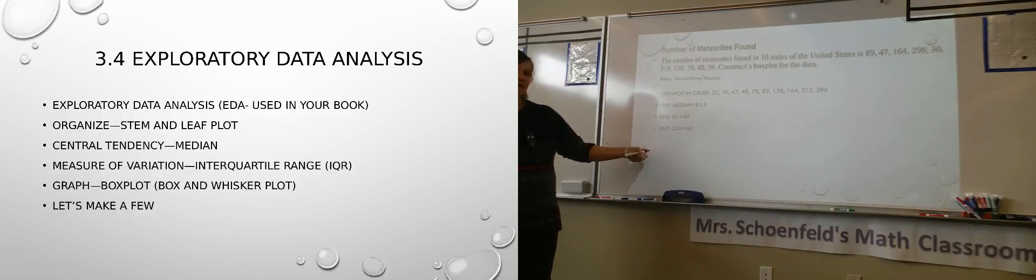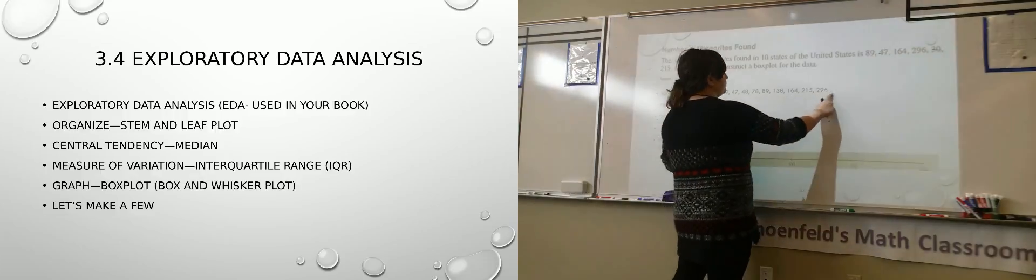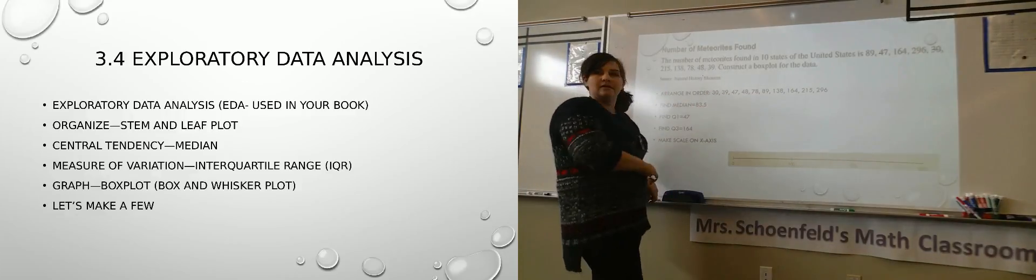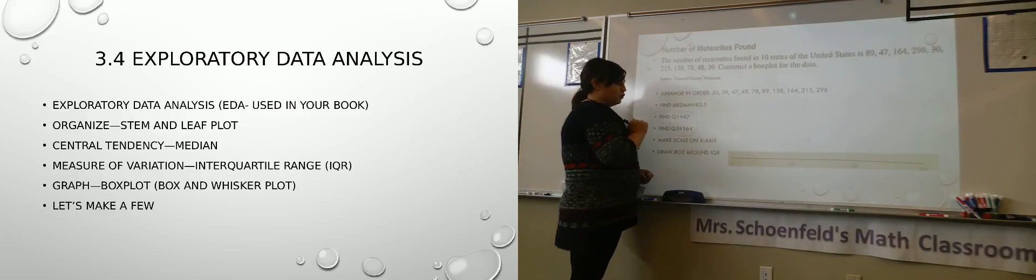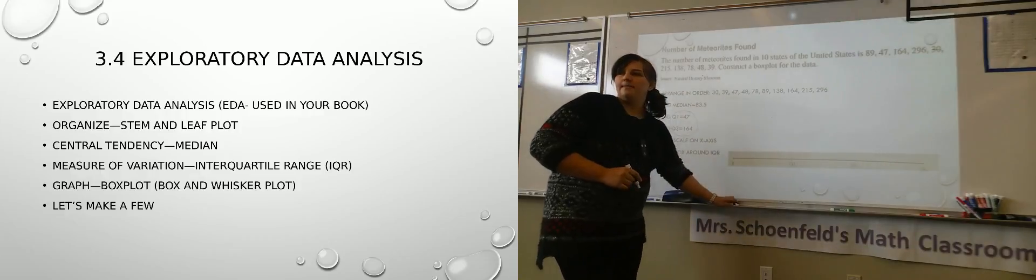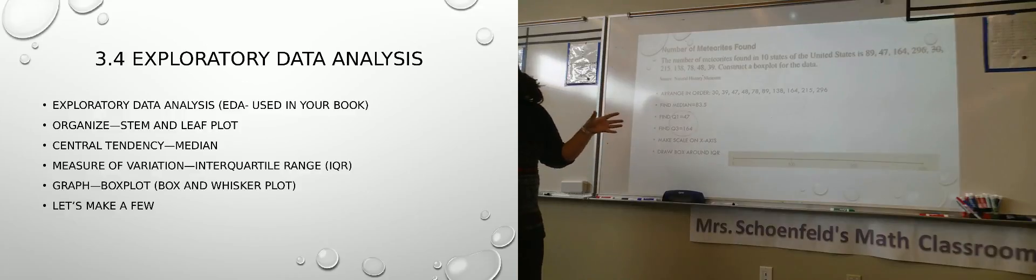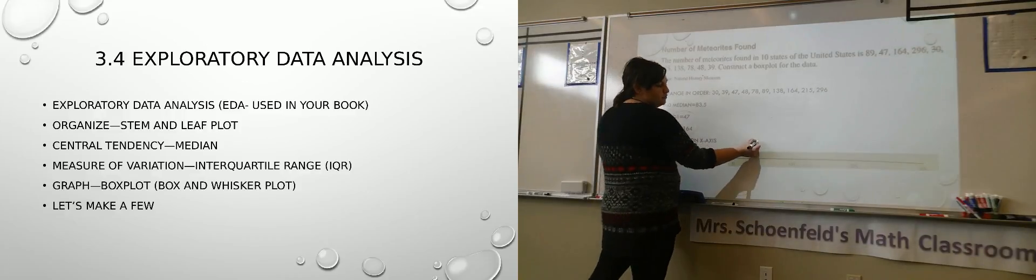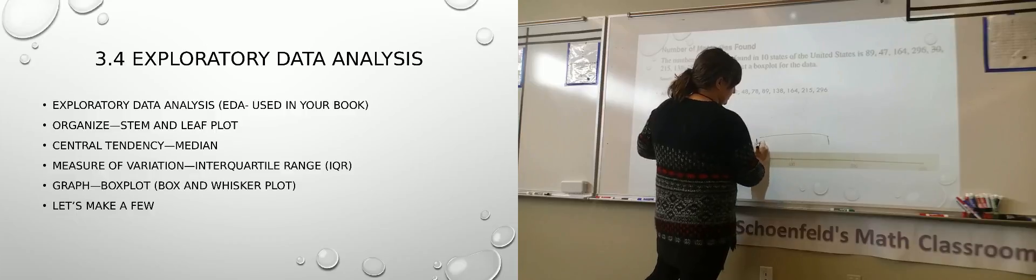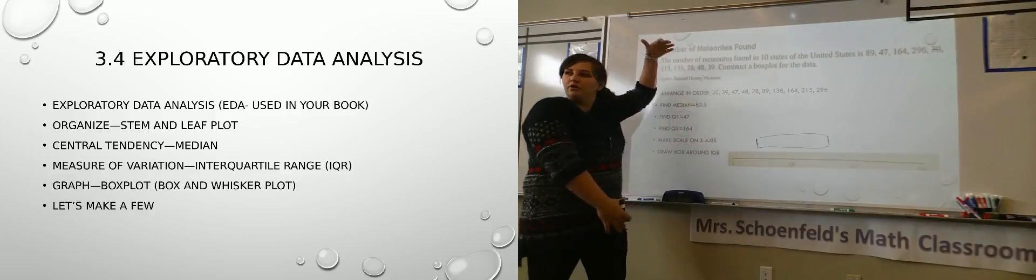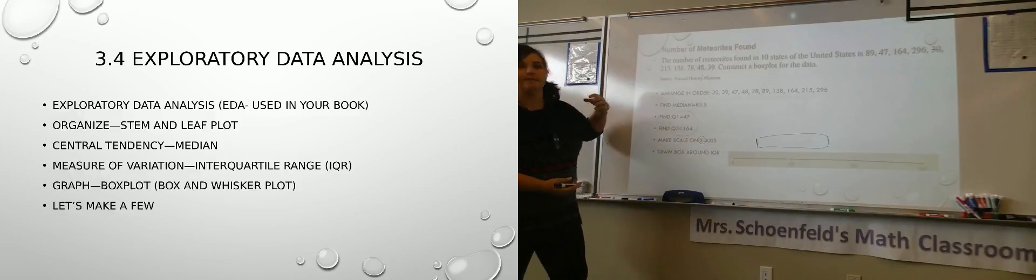So then your next step is to make a scale on the x-axis. Ours goes up to about 300 and it started around 30. Let's just count by hundreds because we like things to be easy as possible. Our next step then is to draw a box around our IQR. So our IQR is, remember, interquartile range is Q3 to Q1. We're just actually drawing it from about 47 to 164-ish. And we're drawing that box in there. And these can also be vertical. So I guess sometimes it could be the y-axis if you were doing a vertical one.